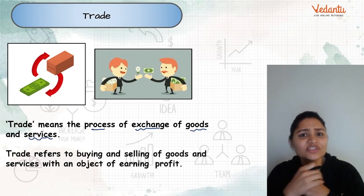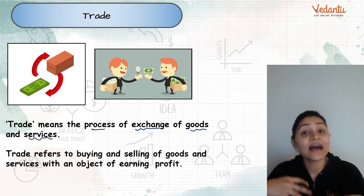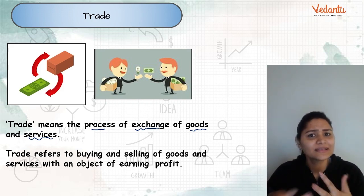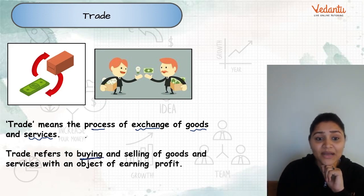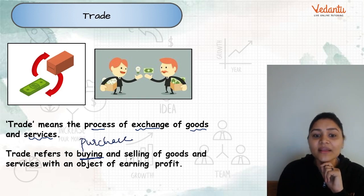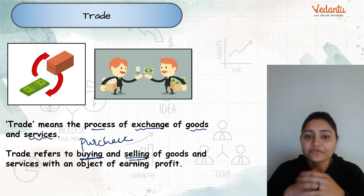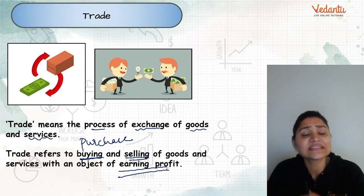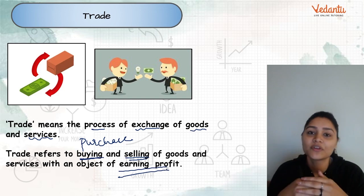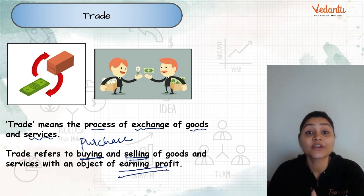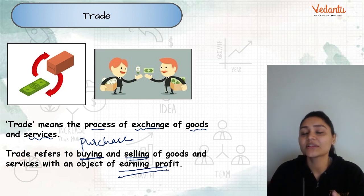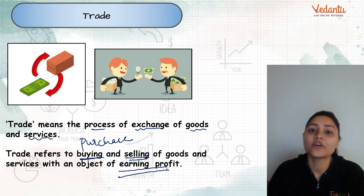Let's understand trade in more detail. When one party gives goods and services and the other gives money in return, there is one party purchasing and the other selling. So trade refers to buying and selling of goods and services with an intent of earning profit. The ultimate reason someone sells is to get money in return. Business is done with the motive of earning profits, and trade is a part of business.